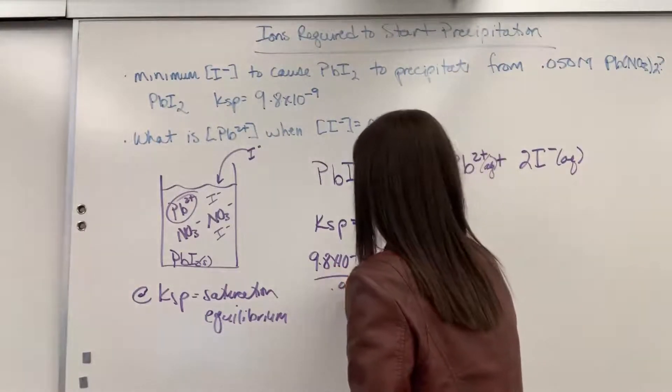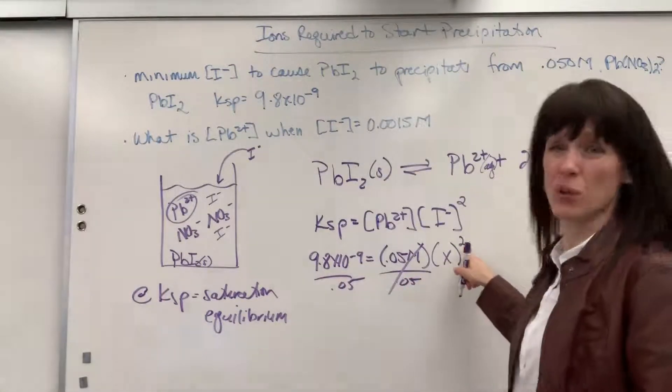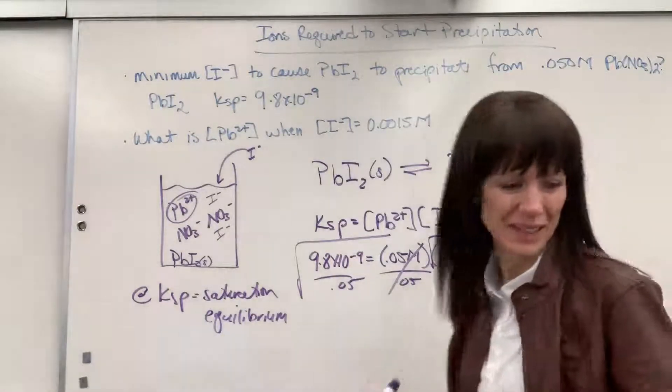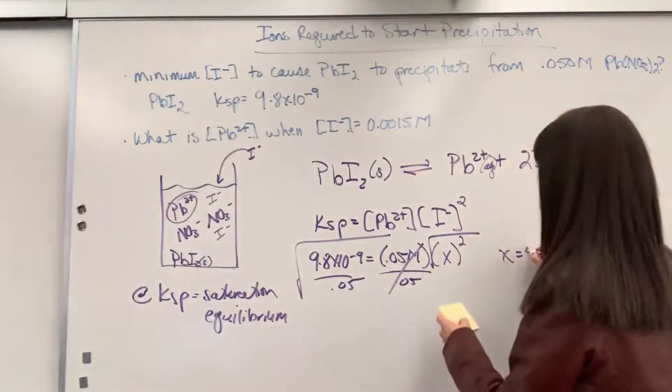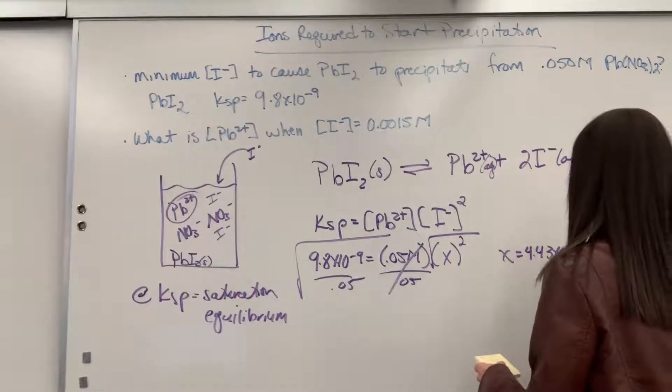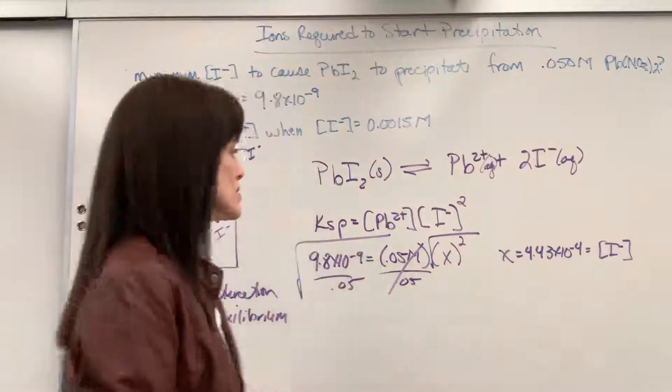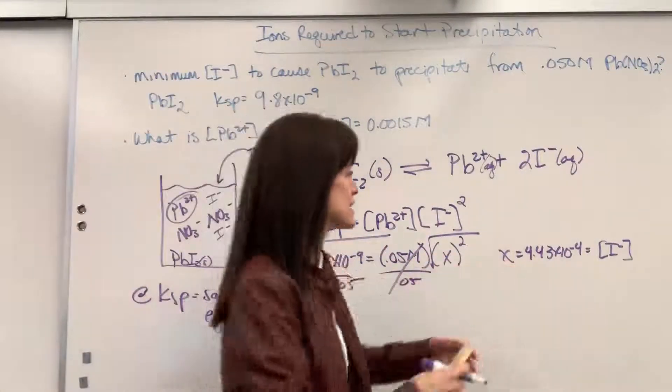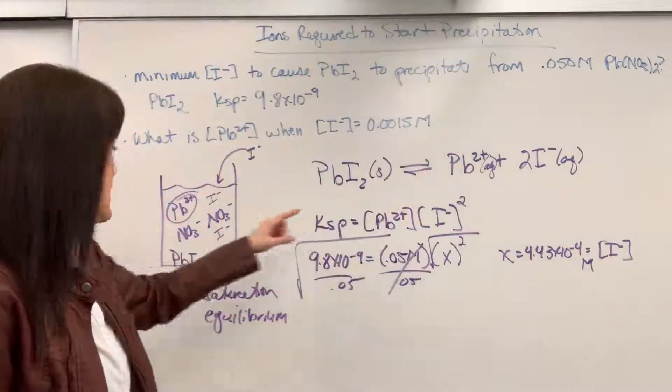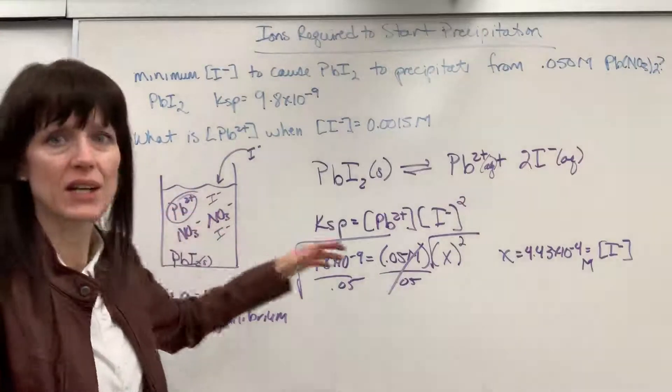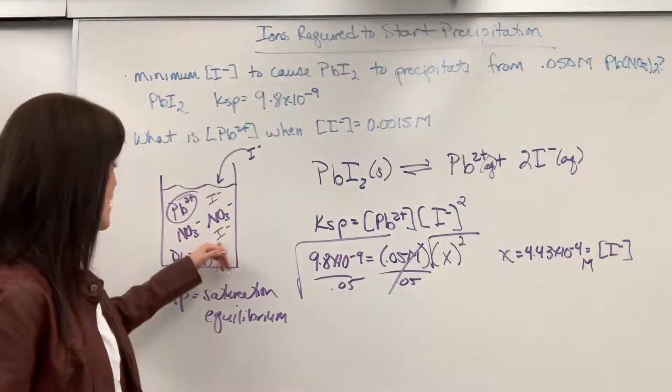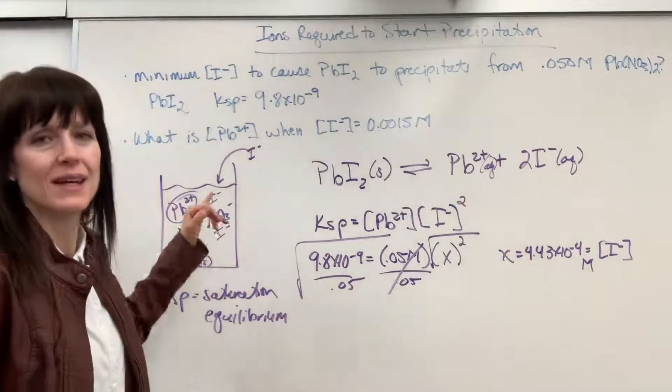So let's go ahead and figure this out. Divide both sides by 0.05. So that cancels. And then I have square right here. So let's take the square root of both sides. And X will equal 4.43 times 10 to the minus 4. And remember, that is that iodide ion concentration. So if I added exactly this molarity, 4.43 times 10 to the minus 4 of my iodide ion, so I have that exact molarity in here, it's perfect saturation. I have dissolved the maximum amount of iodine compared to lead.